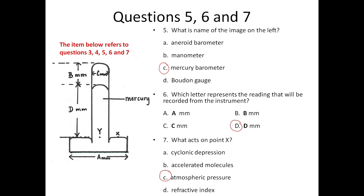Measuring from level Y up to the top of the meniscus of mercury. Then it says what acts on point X? What acts on point X is atmospheric pressure. There is nothing like cyclonic depression and accelerated molecules. C is your answer.